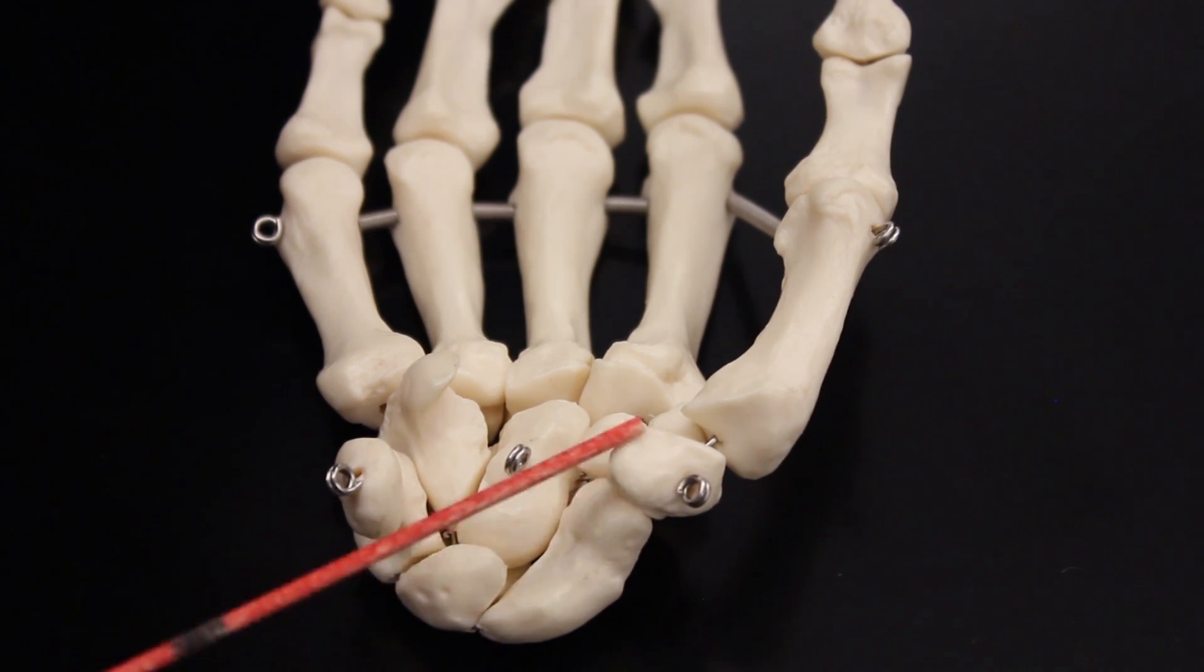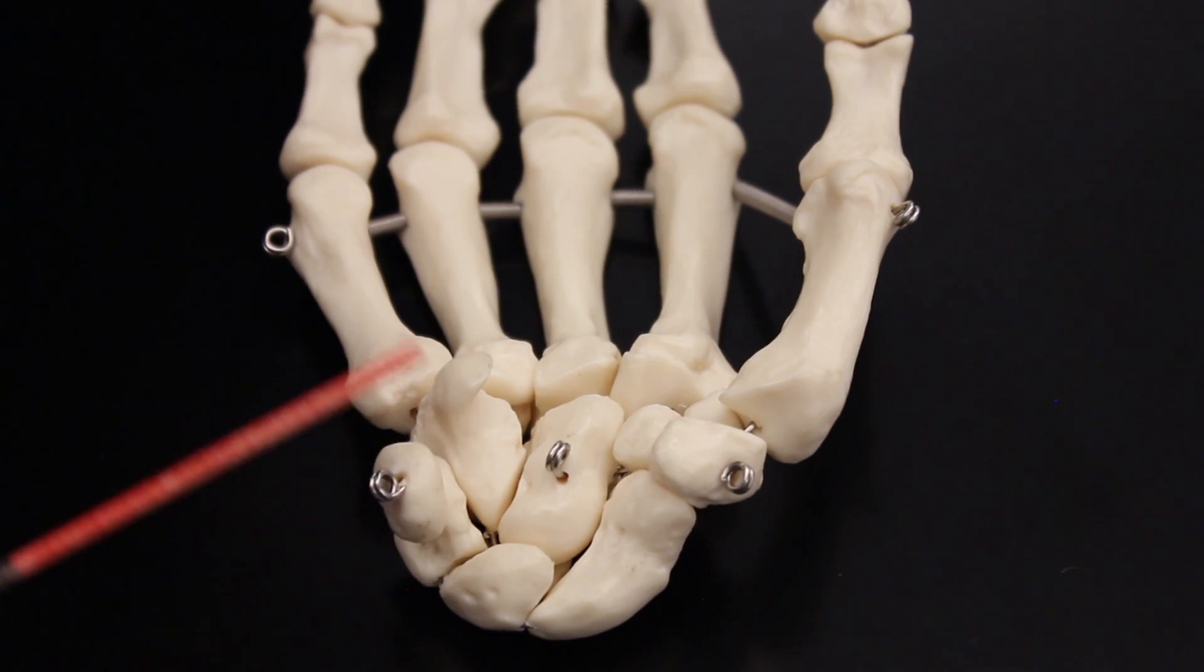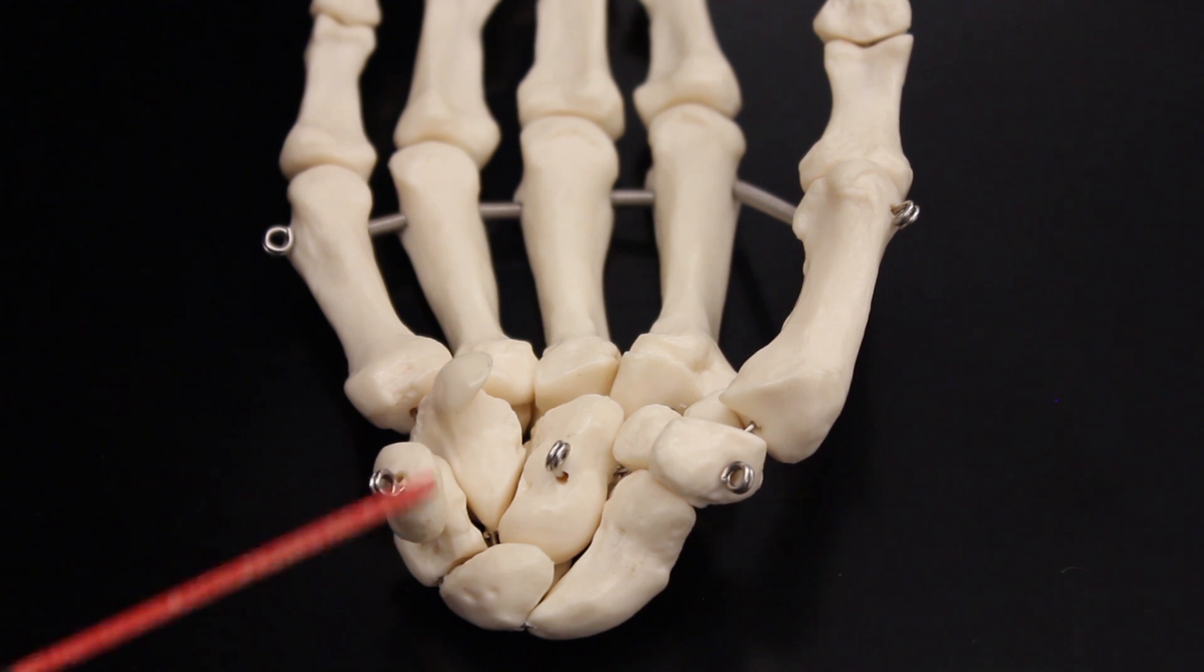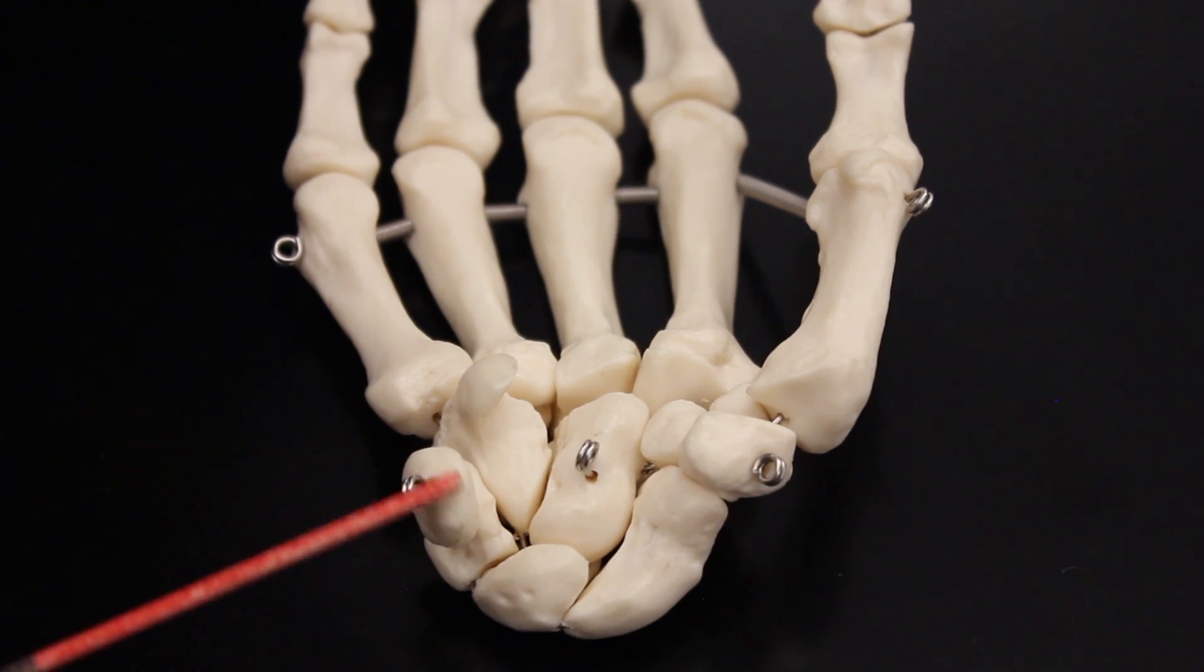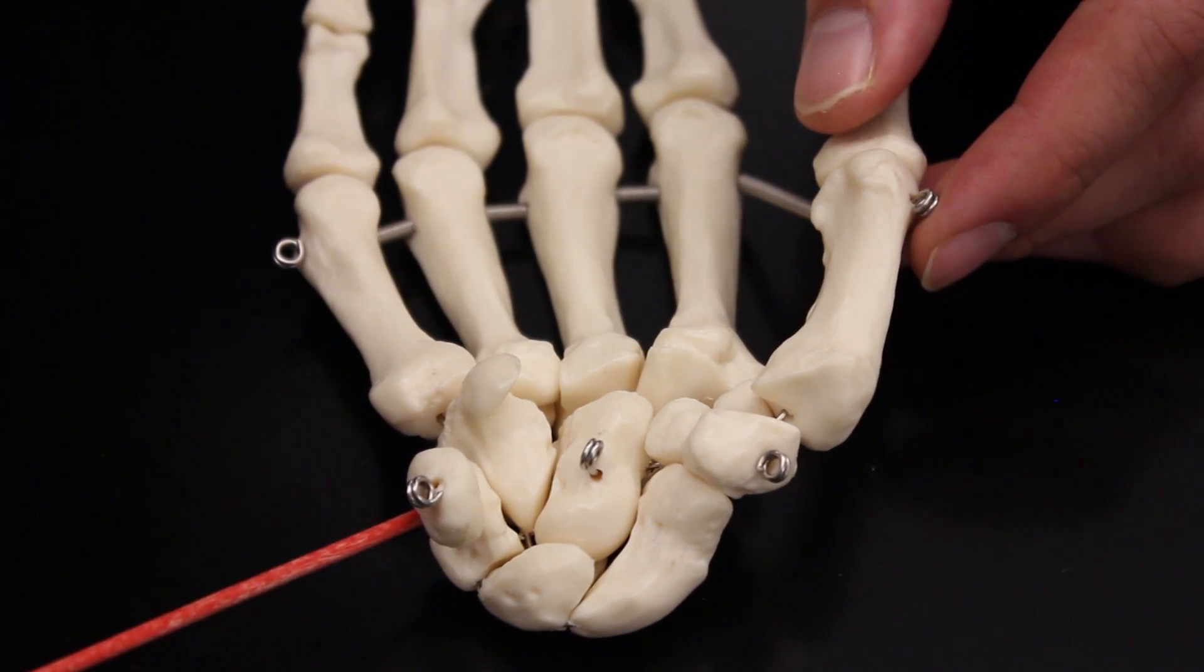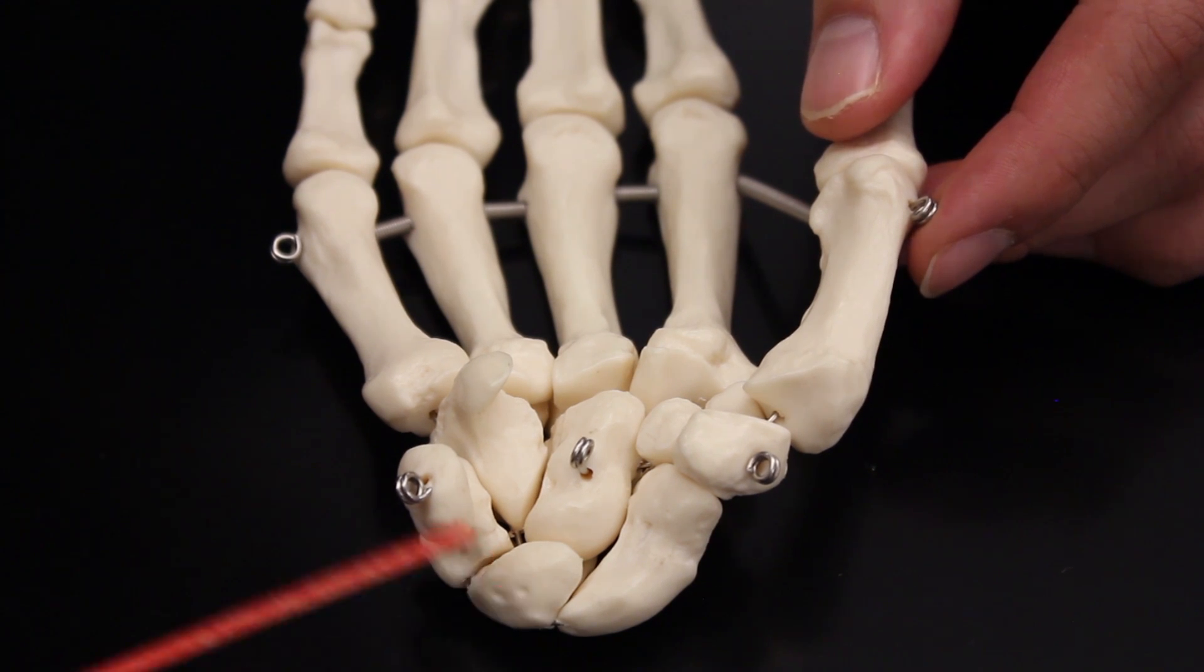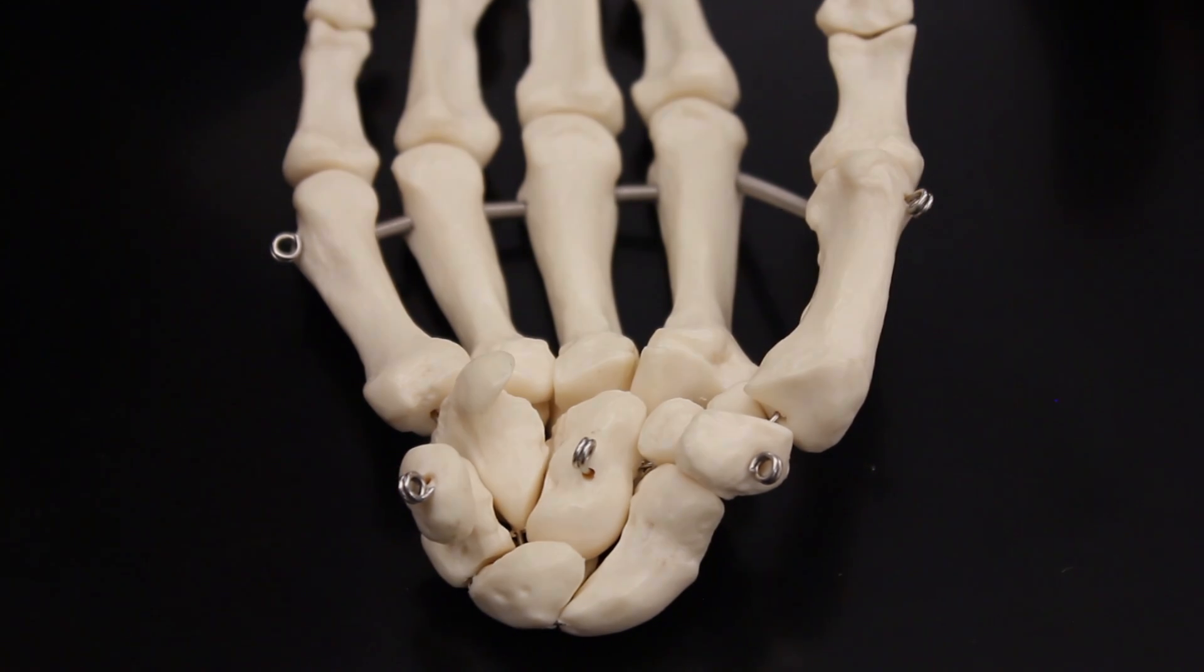This is trapezium. This is trapezoid. This is capitate, hamate. Now this one you didn't see on the dorsal side. This is actually referred to as pisiform. But you can see triquetrium. Triquetrium is right under this one. And then again, this is lunate. And that pretty much covers everything you need to know about the carpal bones.